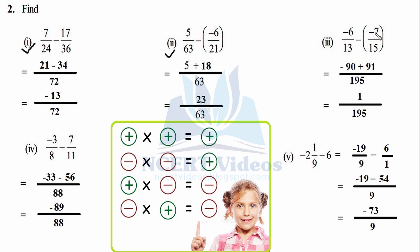Third part: −6/13 − (−7/15) becomes −6/13 + 7/15. Since 13 and 15 are coprime (HCF = 1), LCM = 13 × 15 = 195. Using the distributive law: 15 × 10 = 150, 15 × 3 = 45, so 13 × 15 = 195. Now: (195/13) × (−6) = −90, plus (195/15) × 7 = 91. Positive sign is greater, so subtract: 91 − 90 = 1. Answer: 1/195.